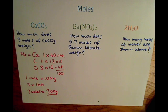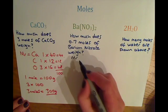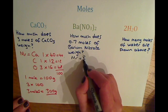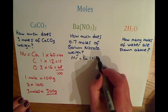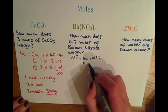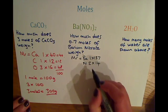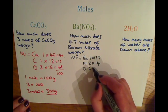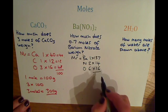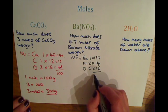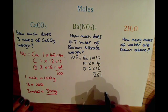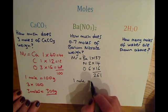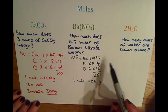For barium nitrate, it says how much does 0.7 moles of barium nitrate weigh? Well, again we need to calculate the MR of barium nitrate. So there's one barium at 137, two nitrogen with a mass of 14 each, and six oxygen with a mass of 16. And all together that has a total relative formula mass of 261. So one mole of barium nitrate is 261 grams.